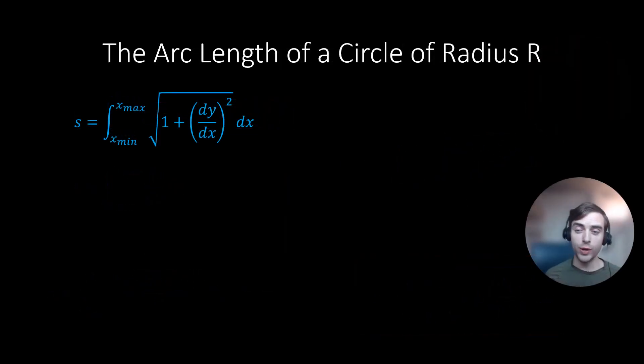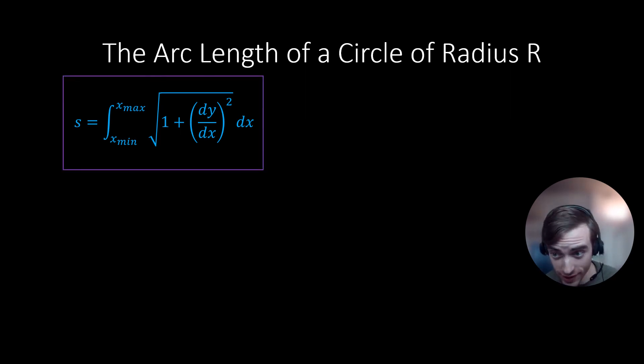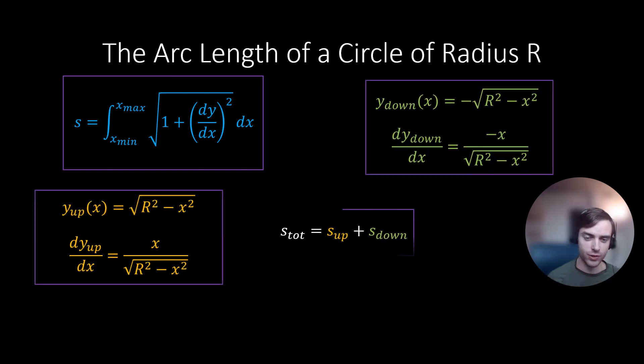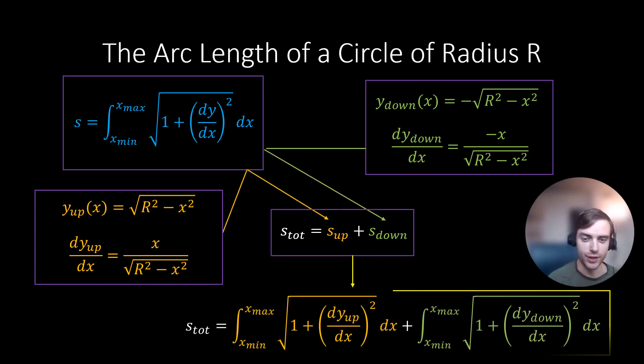So we have our general equation for arc length in blue. We can now determine the total arc length of the circle by taking the sum of the arc lengths of the top and bottom sections of the circle. And here's the animation, which is pretty cool.